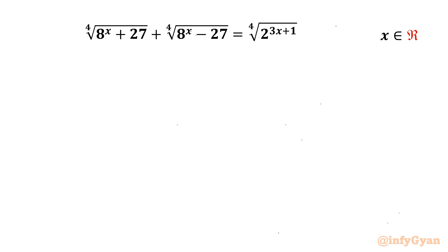Welcome back to InfiGam. In this video we have another very interesting and challenging question from Radical Exponential Equations. The equation is: the 4th root of (8^x + 27) plus the 4th root of (8^x − 27) equals the 4th root of 2^(3x+1). We are going to calculate real solutions, so let us get started with a substitution.